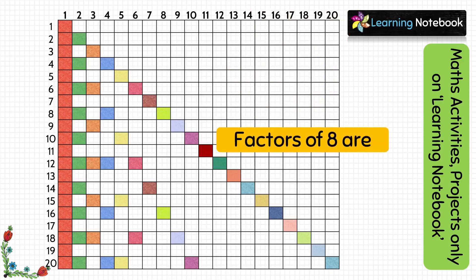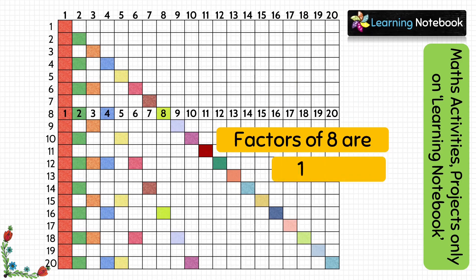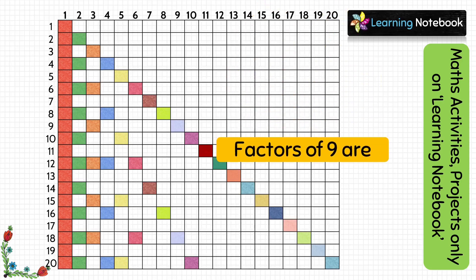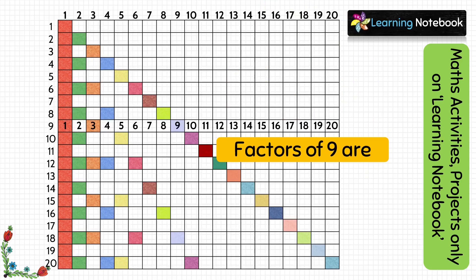Next, we will move to row 8. The boxes colored are 1, 2, 4 and 8, so these 4 are the factors of 8. To find factors of 9, we look at row 9 — boxes 1, 3 and 9 are colored, so these are the factors of 9.